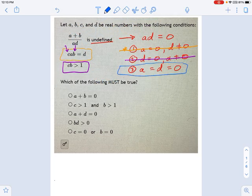So let's see which of the following statements must be true. A plus B equals zero? Not necessarily. Remember, B could be 5. Who knows what B is? How about C is greater than one and B is greater than one? Yeah, that could be true. So that's maybe true, but it doesn't necessarily have to be true.